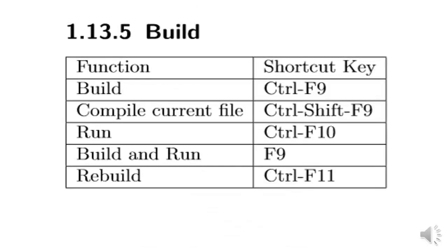Lastly, these are the shortcuts you are going to be using almost every day in Code::Blocks. To build your project, simply press Ctrl+F9. To run the project, press Ctrl+F10. To build and run at the same time, press F9. To rebuild the project, use Ctrl+F11. Your work will be faster and easier.